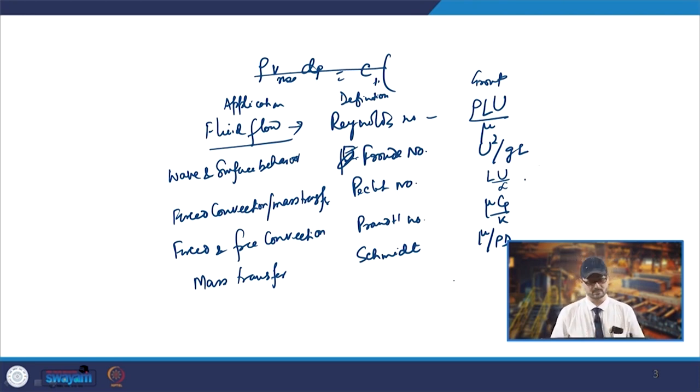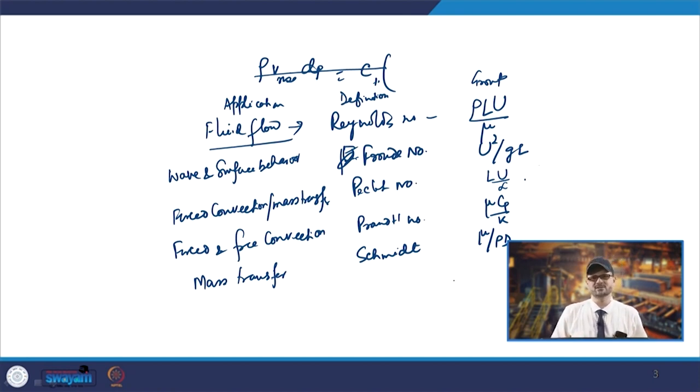You will also come across the Richardson number when dealing with natural convection and heat transfer cases. These are the groups that will be dealt with when we handle these cases. It has been reported that when you use these various dimensionless numbers or groups, normally you go for water modeling in the case of the tundish system.